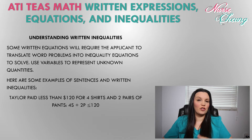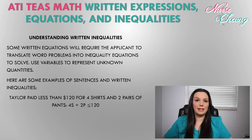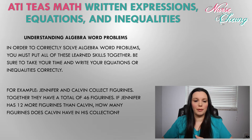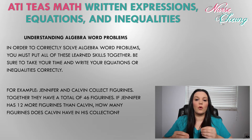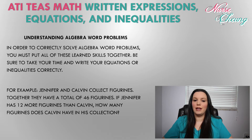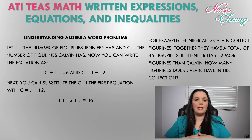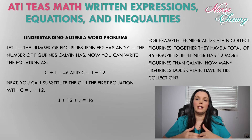Just as we did previously with written equations, let's look at a written inequality example. Taylor paid less than $120 for four shirts and two pairs of pants, so we know that 4s plus 2p is less than $120. Now let's look at some algebra word problems. In order to correctly solve algebra word problems, we must put all these learned skills together and be sure to take our time and write the equations or inequalities correctly. For example: Jennifer and Calvin collect figurines. Together they have a total of 46 figurines. If Jennifer has 12 more figurines than Calvin, how many figurines does Calvin have?